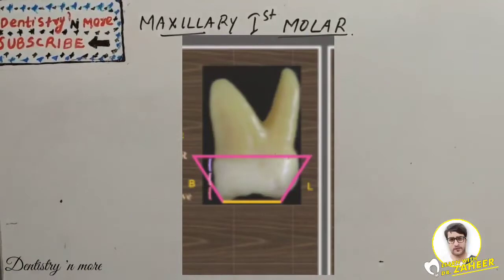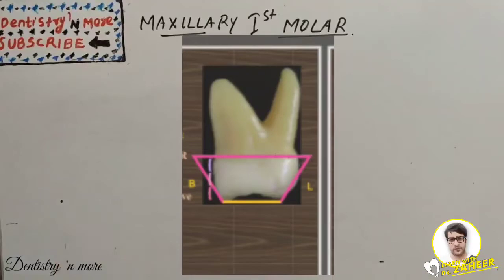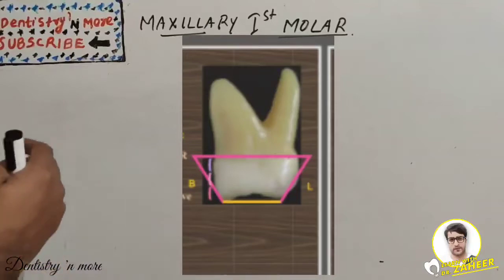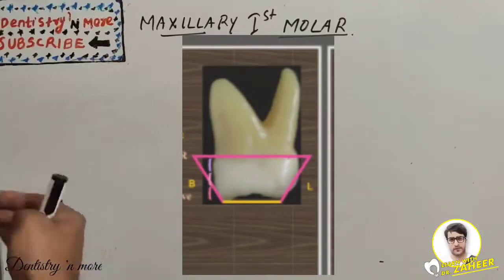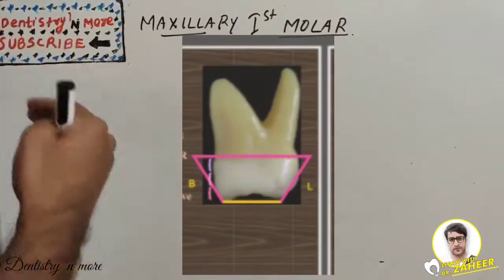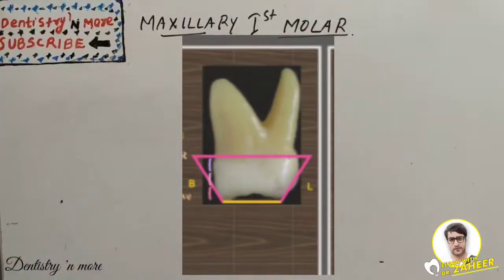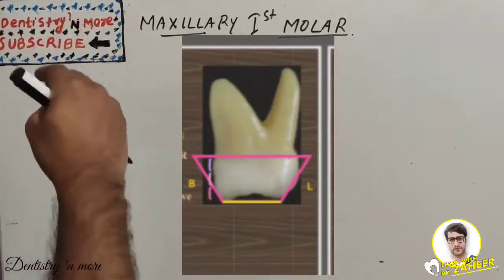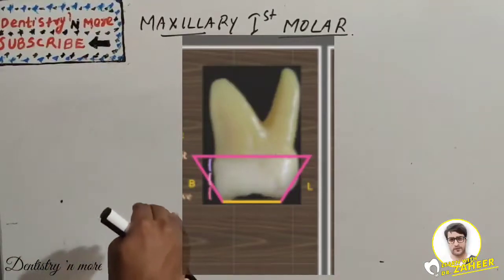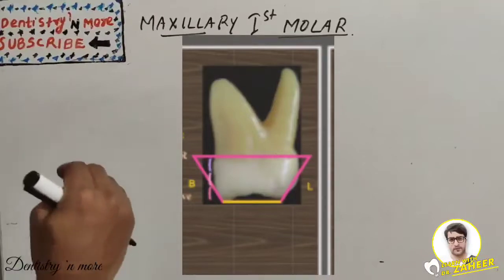On the mesial aspect, the geometric outline is trapezoidal with a small uneven side on the occlusal side. The buccal outline is convex at the cervical one-third (denoting the cervical ridge), concave at the middle one-third (denoting the termination of the buccal developmental groove), and slightly convex at the occlusal one-third (representing the mesio-buccal cusp).